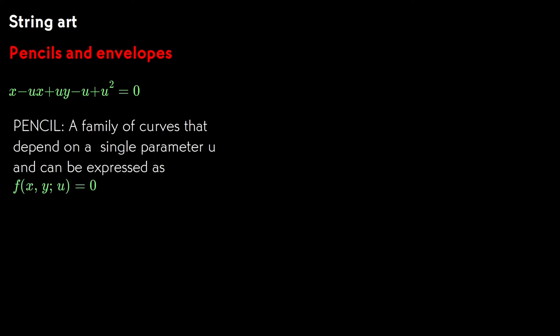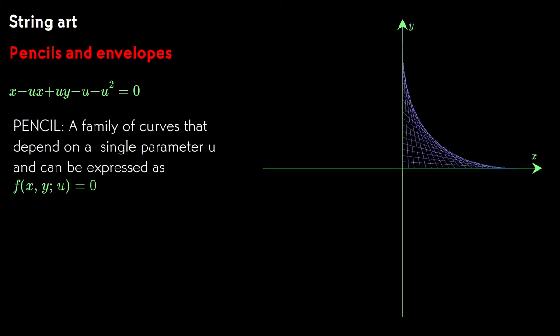A pencil is a family of curves that depend on a single parameter and can be expressed in implicit form. The equation above defines a pencil, in which the curves happen to be straight lines. But they don't have to be straight lines.